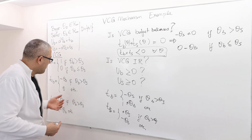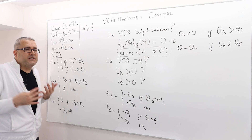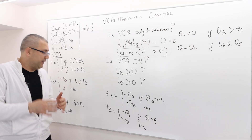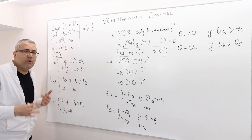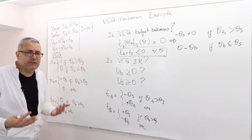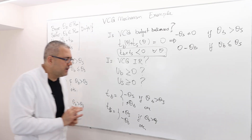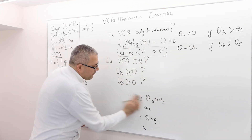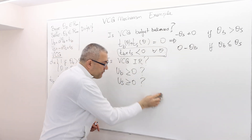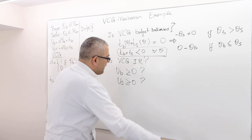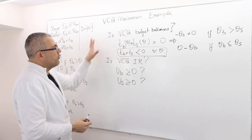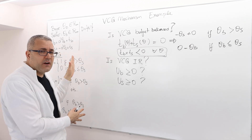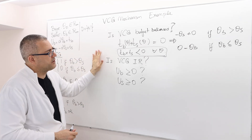What happens here is the buyer makes a payment and the seller receives zero dollars. Well, then why make a trade in the first place? That's a very problematic mechanism. Budget balancedness is therefore an important criterion. We concluded that the VCG mechanism in this environment is clearly violating budget balancedness.